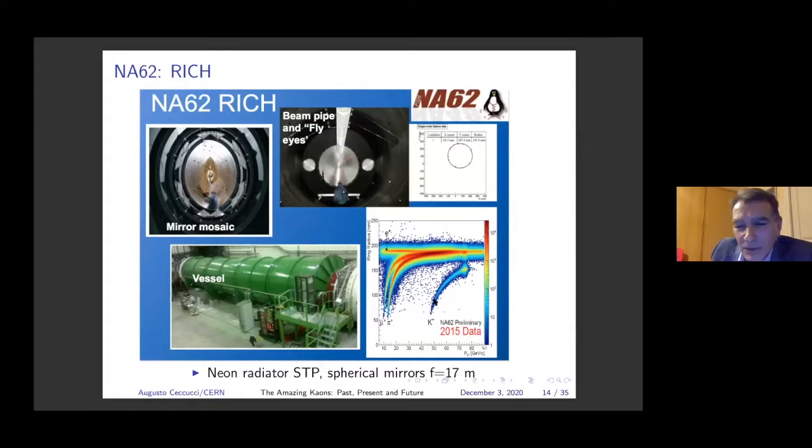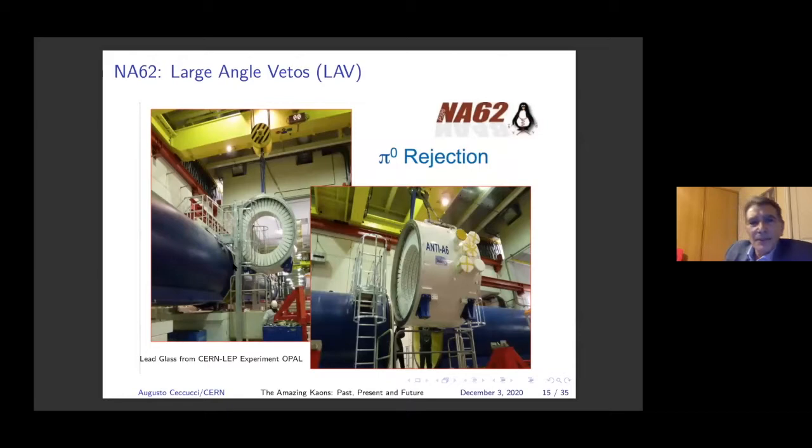There are different detectors. This is a detector that is based on a differential Cherenkov counter detector. It is able to give a response only when a kaon of 75 GeV passes through. This is the pixel tracker which is traversed by 750 megahertz of particles and they have all to be tracked. There are large angle detectors to surround the tank, making sure that photons don't escape. There's ring imaging Cherenkov counter, the krypton calorimeter, muon detectors and more.